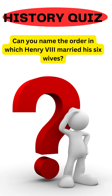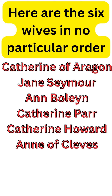Can you name the order in which Henry VIII married his wives? After watching this video you will never forget it. Here are the six wives in no particular order: Catherine of Aragon, Jane Seymour, Anne Boleyn, Catherine Parr, Catherine Howard, and Anne of Cleves. I'll give you 20 seconds to have a go.